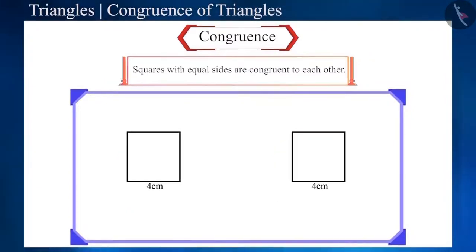Similarly, squares with equal sides are congruent to each other. For example, two or more squares with their sides measuring 4 cm are congruent to each other. Here, the congruency of a square depends on the side of a square.